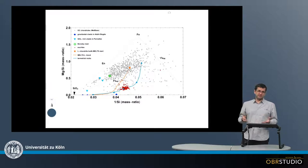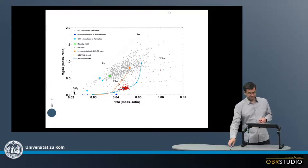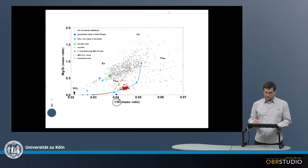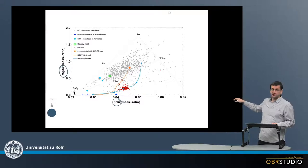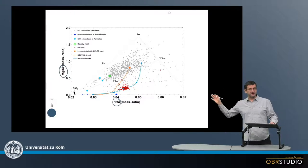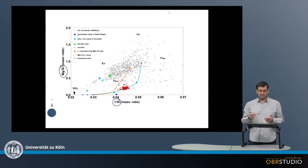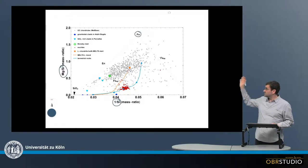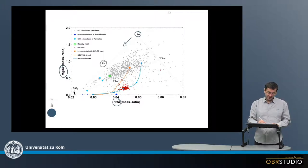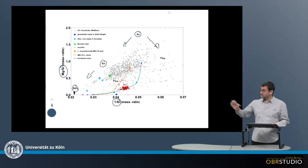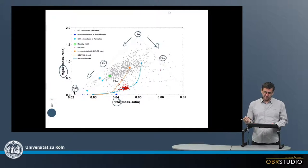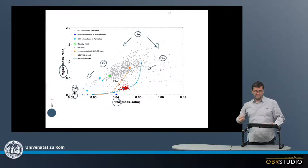Now to test whether we can see this kind of differentiation, we can look at this plot here. On the x-axis there is the mass ratio of 1 divided by silicon, and on the y-axis there is the mass ratio magnesium divided by silicon. These plots are quite convenient because Mg/Si versus 1/Si produces mixing lines that are straight lines. For example, up here is forsterite, and when silica is added, this develops along a line down to enstatite and finally silica. In the other direction there is the addition of iron, so this produces fayalite, and if silica is then added to fayalite, there is a second mixing line also arriving finally at silica.